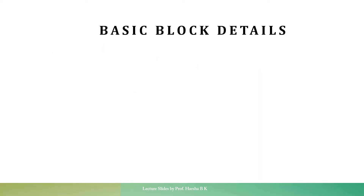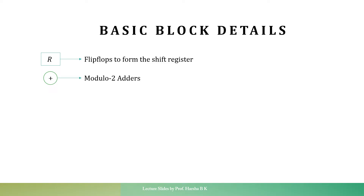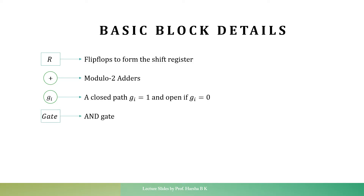Now let us try to understand the basic blocks used in the encoding circuit. First, R stands for the flip-flops that form the shift register, and R also represents the remainder bits. Then we have modulo-2 adders. Followed by that, we have GI, which are the coefficients of the generator polynomial. If GI is equal to 1, there is a closed path between two points; it will be left open if GI is equal to 0. Finally, we have an AND gate.